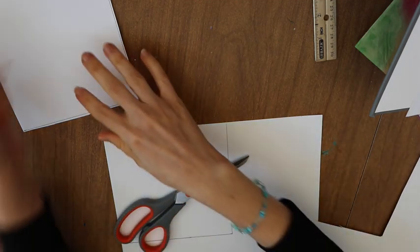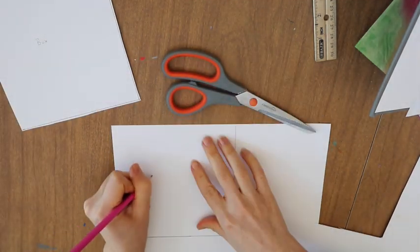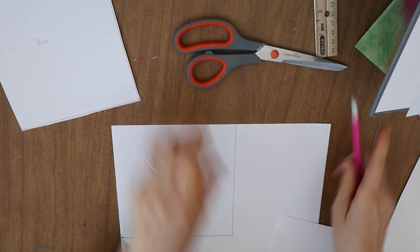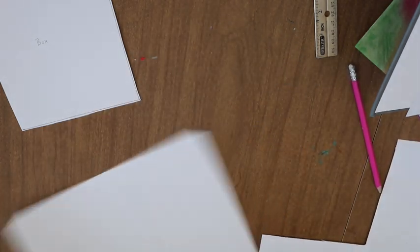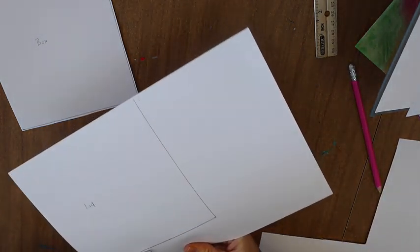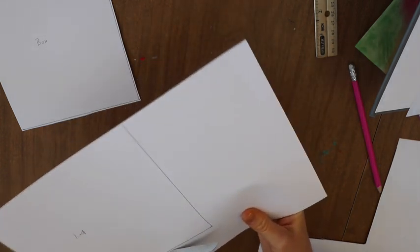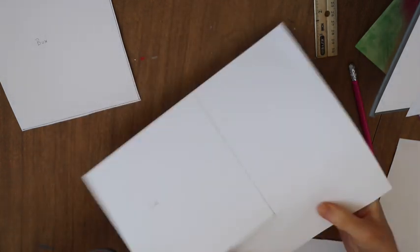I'm just going to write box and lid so I do not get them confused. You could use two different colors of paper if you wanted to not get them confused.